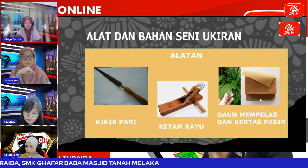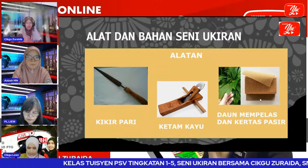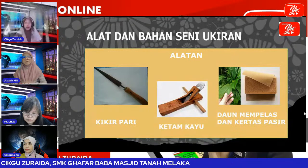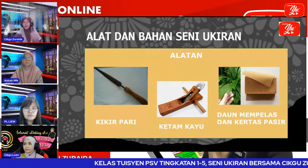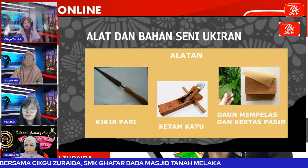Dalam kerja kayu, kita akan gosok-gosok menggunakan kertas pasir. Bila dah sudah buat kerja kayu, kita akan gosok untuk membuat hasil ukiran tu lebih licin dan lebih kemas. Daun mempelas ni adalah pilihan — kalau secara tradisional pada masa dahulu, pengukir akan guna daun mempelas untuk menggosok kayu.